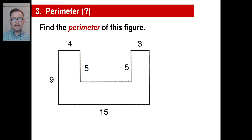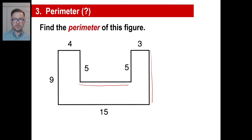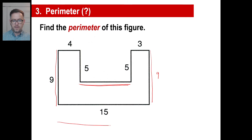Find the perimeter of this figure — you'll notice there are two sides missing. Which two sides? That side's missing here, and also this side right there. This one's pretty simple; we can just look over and say this side from here to here is 9, so that must be 9 as well. This one's a little trickier — from here to here is 15, and there's 4 there and 3 there, which would equal 7.